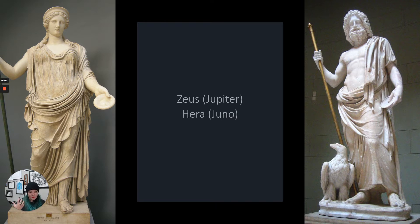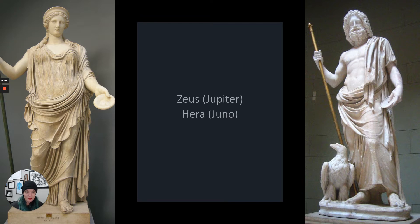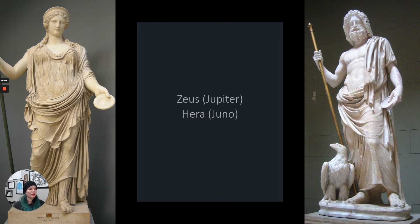Zeus is kind of the boss guy, and he rules the sky — the sky is his domain. His symbol is a lightning bolt. Sometimes he's also shown with an eagle, and sometimes he just has a staff. He has a big beard all the time, but so do his two brothers. So if you're trying to distinguish them, the best way is to look at what else is with them — look at their context.